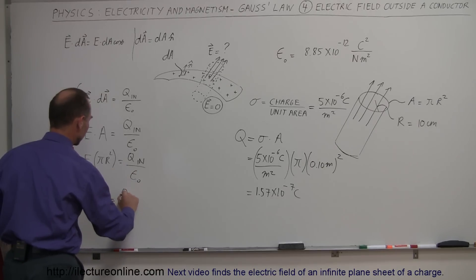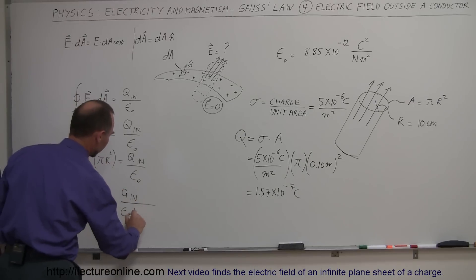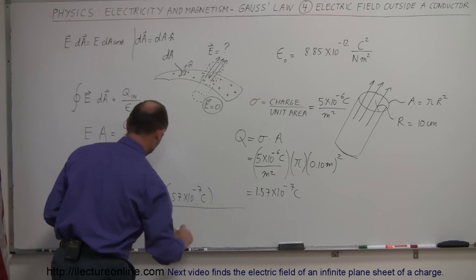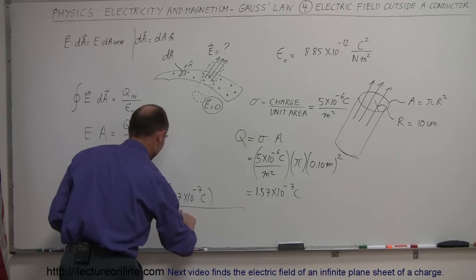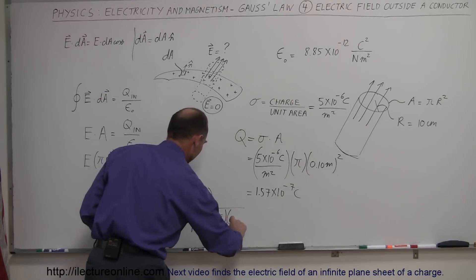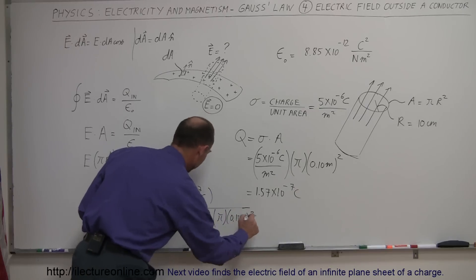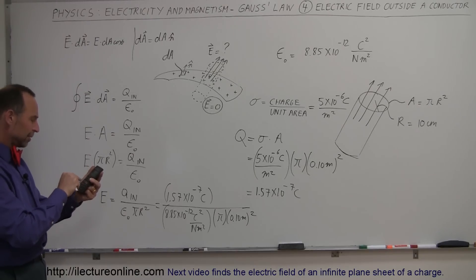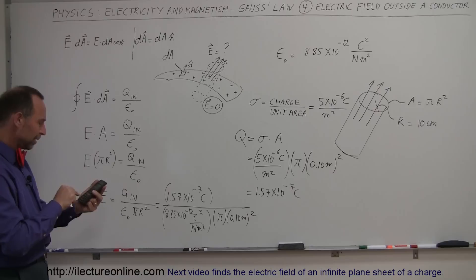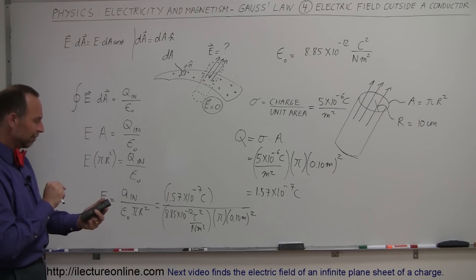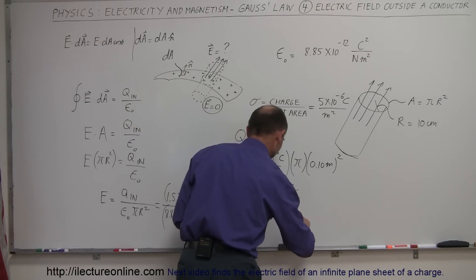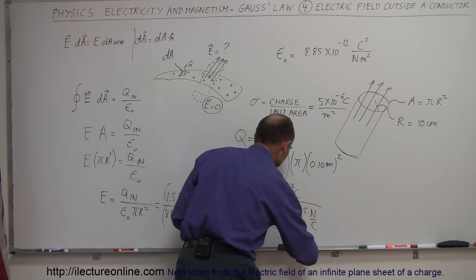That is the charge inside. So E equals Q inside divided by epsilon sub nought, divided by pi R squared. Plugging in: 1.57 times 10 to the minus 7 coulombs for Q inside, epsilon sub nought is 8.85 times 10 to the minus 12 coulombs squared per newton meter squared, and the radius is 0.10 meters squared. Solving that gives us 5.65 times 10 to the fifth newtons per coulomb — the appropriate units for the electric field.